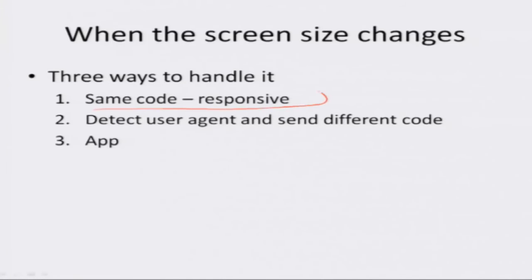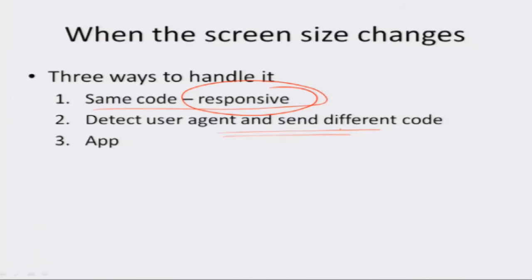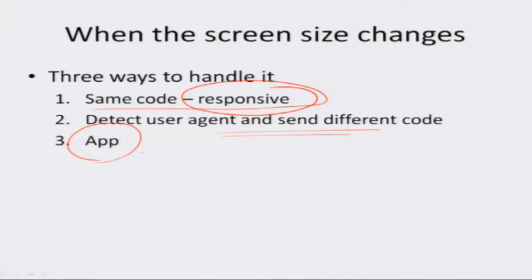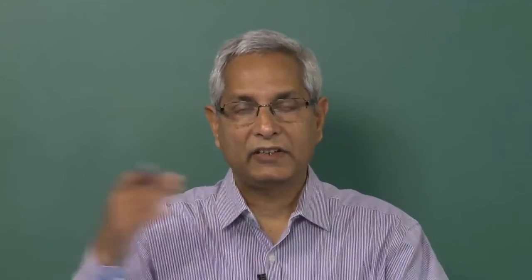This is called a responsive website. It responds to the way the device on which the content has to be displayed should be displayed. Another way is when the HTTP request comes to the server, the server can figure out the user agent — the HTTP request encodes information about the browser and the device, whether it is a mobile device or a desktop. Based on that information, the server sends different programs so they format correctly and display nicely on the user device. An entirely different way is to ask the user to download an app and access the content from that app.